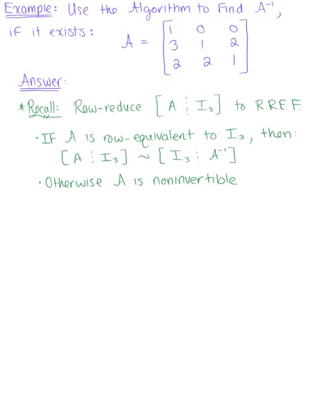We'll use the algorithm to find A inverse. We're given the 3 by 3 matrix A: 1, 0, 0, 3, 1, 2, 2, 2, 1. Let's start by recalling the algorithm for finding the inverse.